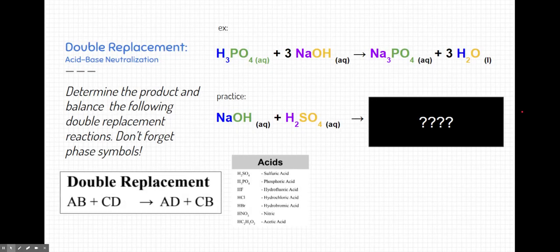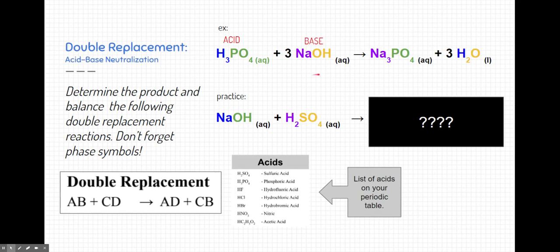The other type of double replacement reaction is an acid-based neutralization reaction. In this, take a look at the example above, we have an acid attaching itself to a base to form two products. One of them is a salt, which is sodium phosphate, and the other product is water, which is our driving force of this type of reaction. Now this acid is found on a list of acids on our periodic tables. Typically acids start with hydrogen, but we're going to get more in depth on that later. This is a base, sodium hydroxide. Typically bases have hydroxide in them, but again, we'll talk about that more in depth later. Let's see if you can figure out this practice problem. This works very similar to the last type of reaction, or the last type of double replacement reaction. Don't forget about charges.